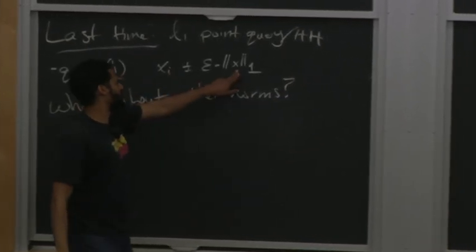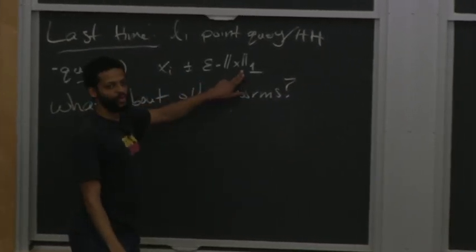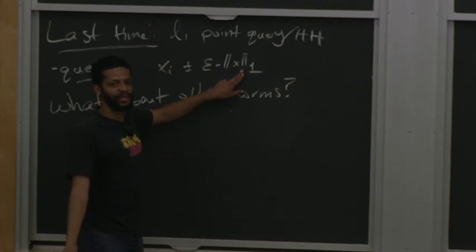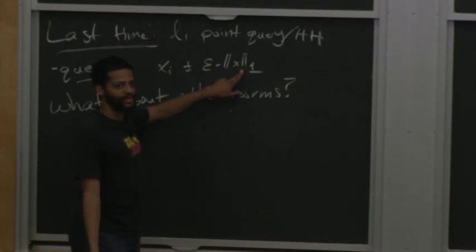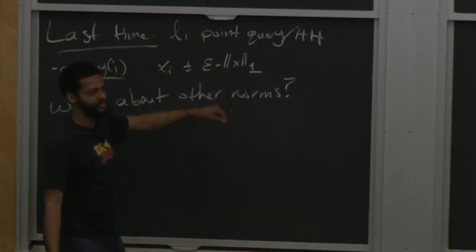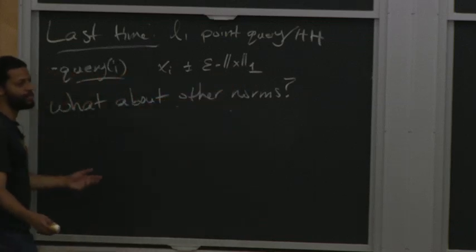If you put the infinity norm instead of the 1-norm, that's an even better guarantee — it's a smaller error. So ideally, you want the norm to be a bigger norm.